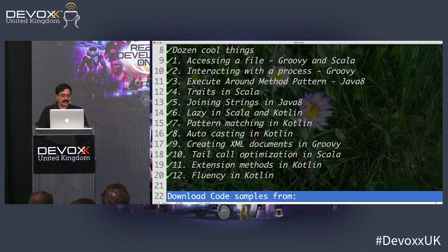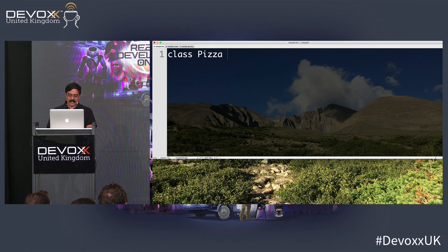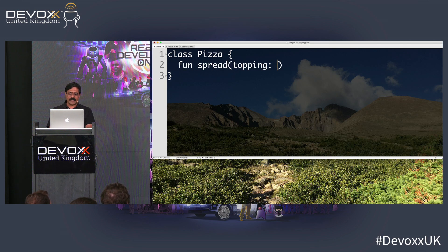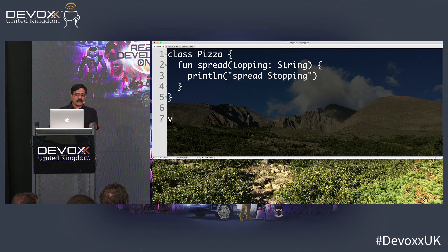Talking about fluency, the last example is creating internal DSLs in Kotlin. We have a class called Pizza with a method called spread that takes a topping and prints 'spread' with that topping given to us. You can say pizza = new Pizza() and start building from there.